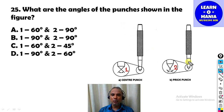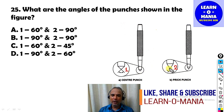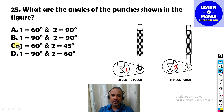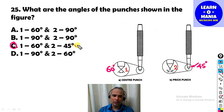Two center punches are shown — a center punch and a prick punch. What are the tip angles (angle 1 and angle 2)? The correct answer is option C — the center punch angle is 60 degrees and the prick punch angle is 45 degrees.